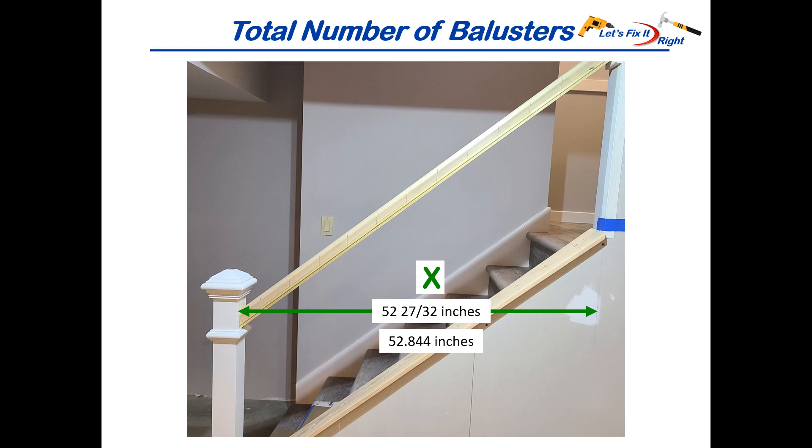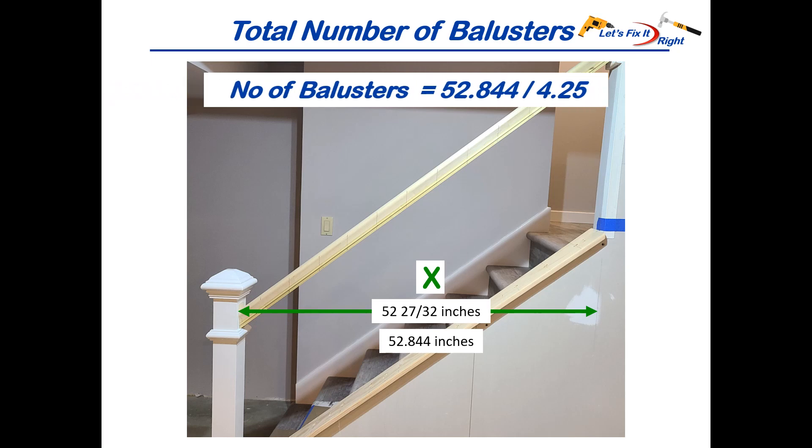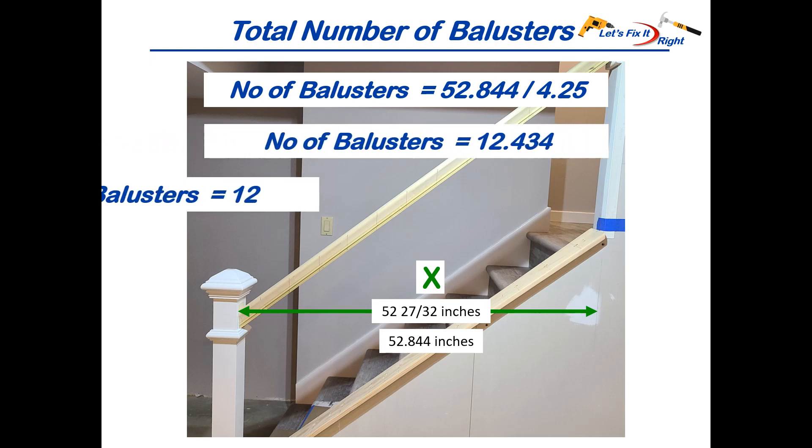This means that our total number of balusters will be the total horizontal width of the staircase or 52.844 inches divided by our 4.25 center line distance which equals 12.434 or 12 total balusters needed to meet code on the stairwell.